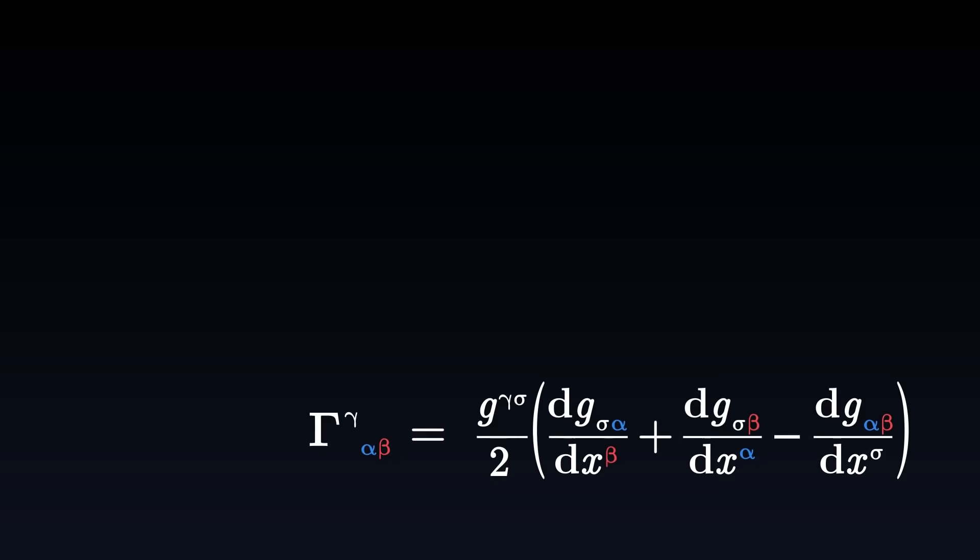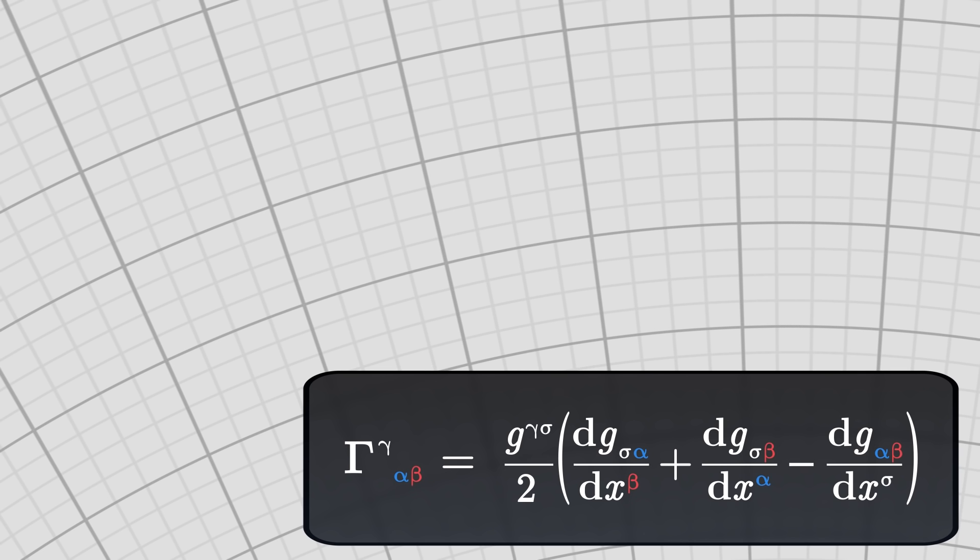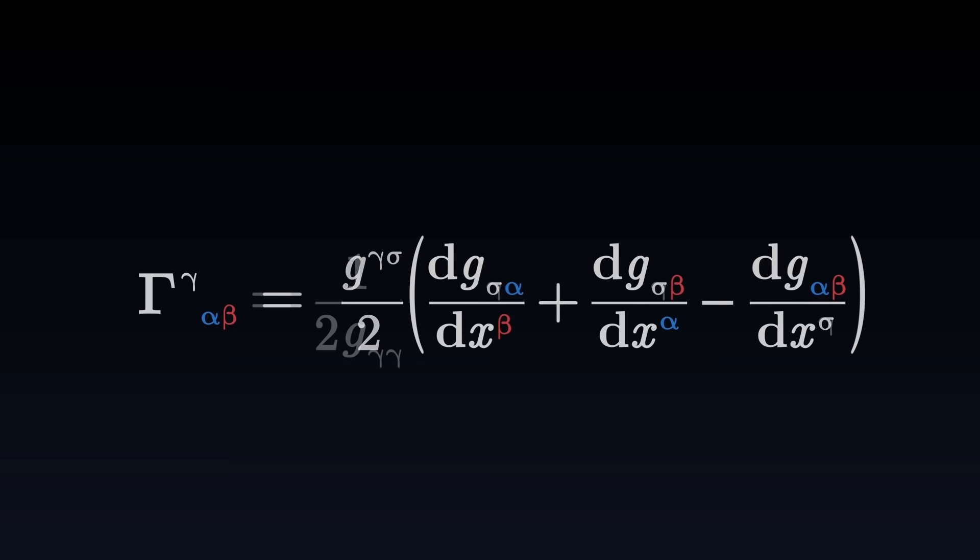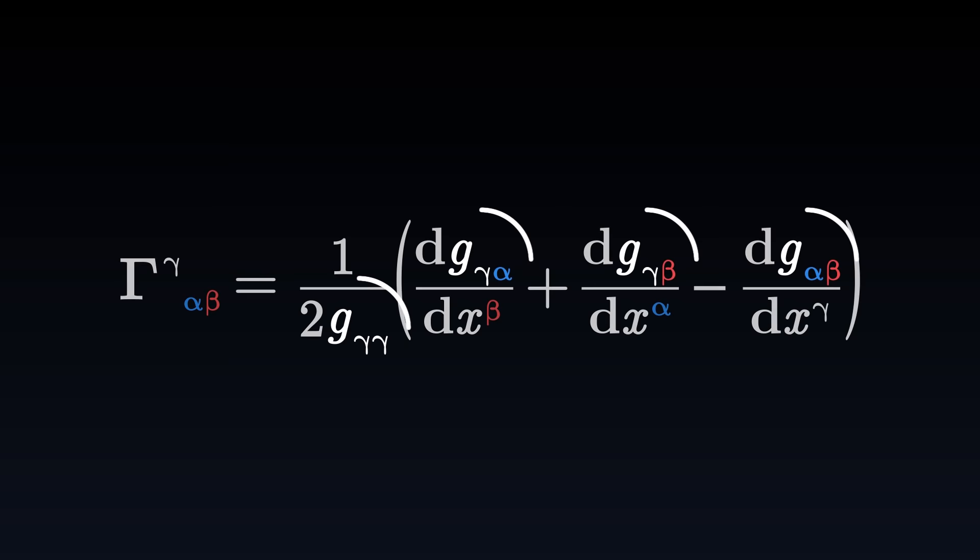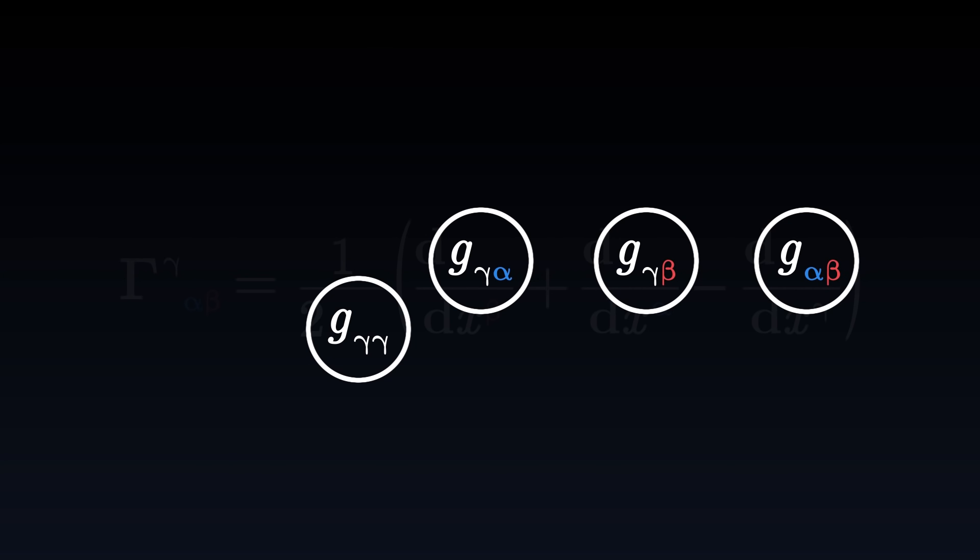Most of the time, however, this expression can be simplified by choosing an appropriate coordinate system. In particular, we can manage to choose a grid whose axes are perpendicular to each other. With such a grid, the expression of the Christoffel symbols is simplified, as it no longer involves the inverse of the metric, but only its components and their derivatives.